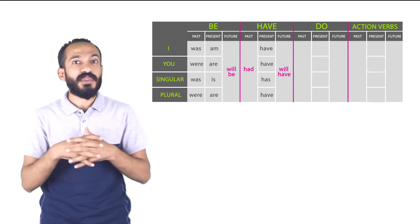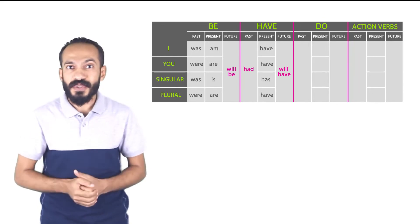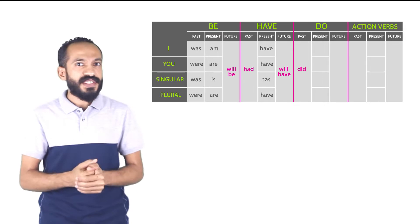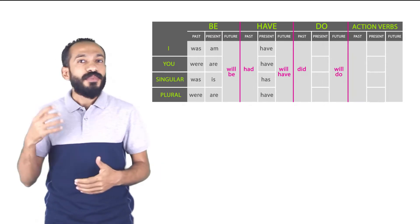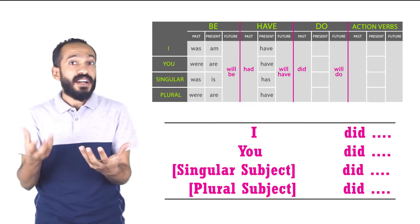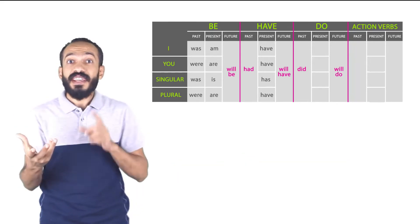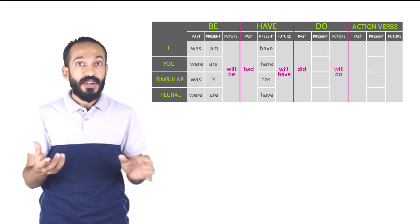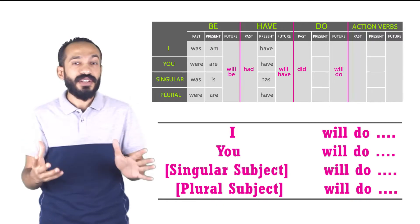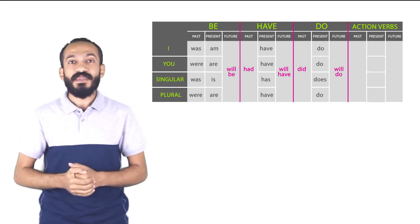Let's talk about the third verb: verb to do. The good news is verb to do in the past tense has only one form — 'did' — and in the future tense has only one form — 'will do.' No matter the subject you have in the sentence, you will use only 'did' in the past: I did, you did, they did, he did — doesn't matter. In the future we will use 'will do.' The only thing here, again, is the present tense — sometimes we use 'do' and sometimes we use 'does.'